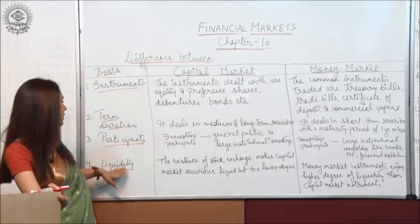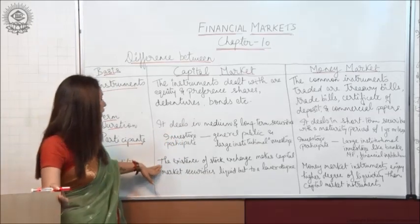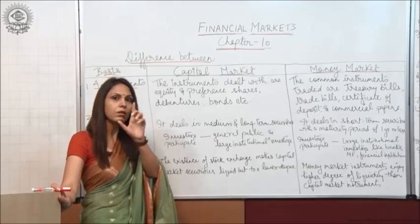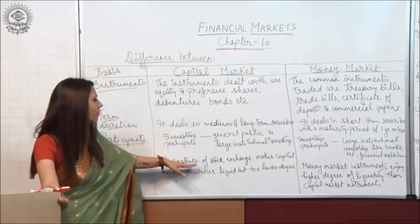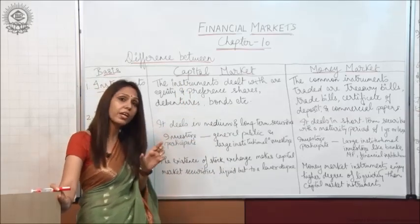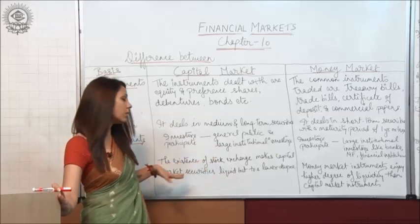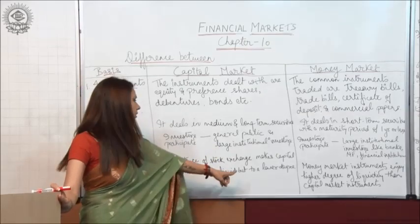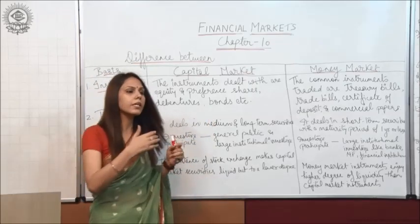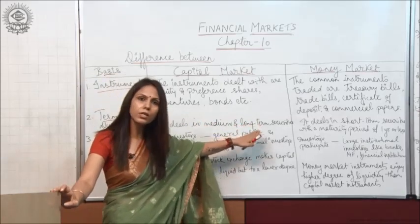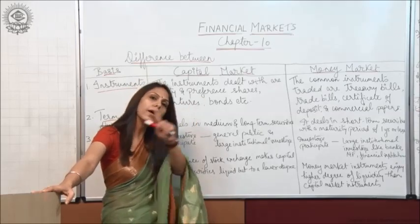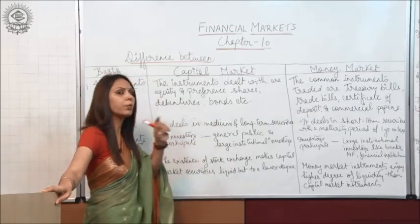The fourth point is liquidity. Liquidity means whether securities are convertible into cash or not. The existence of stock exchange in capital market makes capital market securities liquid, but to a lower degree, because they are medium and long term securities. So the conversion of securities into cash takes quite a long time, which is why liquidity is lower.